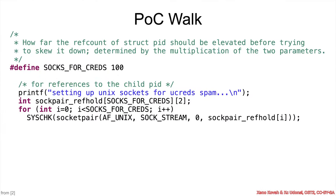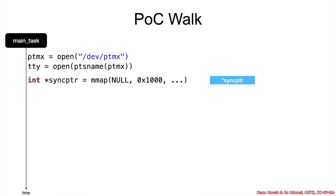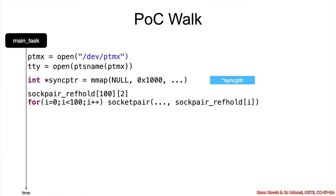Then there's setup of socket pairs. These are going to be used to determine how far they try to skew the reference counter down, determined by the multiplication of two parameters. Later, socks_for_creds will be 100 and creds_per_socket will be 100, so there will be 10,000 attempts to race and force the PID counter down. At this point it's just setting up 100 sockets, and later on it will send 100 messages on each of those 100 sockets, which will be used for the racing.